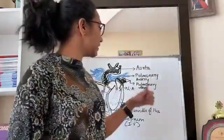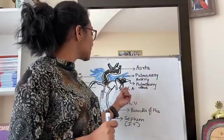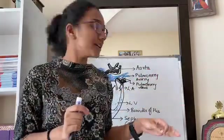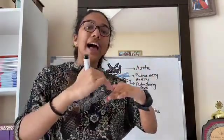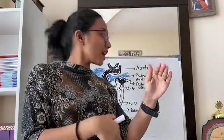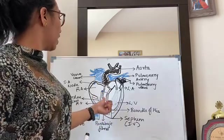On the left side you have bicuspid valves, also known as the mitral valve. What happens is when blood comes into the ventricle, these valves get closed up so that the blood doesn't move back into the atria. That is the function of valves.